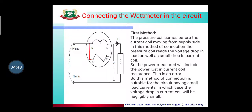Now, how do we connect a watt meter in a circuit? In the first method of connection, the pressure coil is placed before the current coil when moving from the supply side, and the current coil is connected in series with the load.